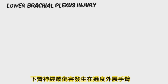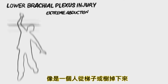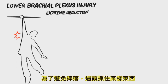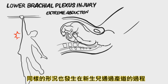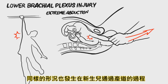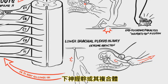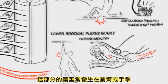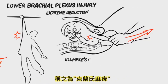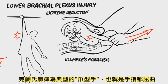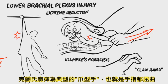Lower brachial plexus injury occurs during extreme or violent abduction of the arm, such as occurs when a person falling from a ladder or tree attempts to stop himself by reaching overhead for something to hang on to. Additionally, this type of injury can also occur during delivery when a baby is pulled by the arm from the birth canal. Lower brachial plexus injury results from extreme stretch placed upon the C8 root, the T1 root, the lower trunk, or a combination of these. Damage to these structures compromises muscles in the forearm and hand, resulting in Klumpke's paralysis, which is typified by claw hand in which the fingers are flexed.